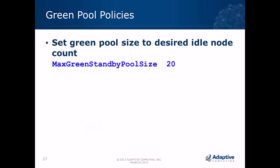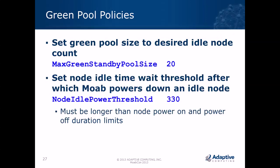You must define the green pool size using the max green standby pool size parameter. Choose a value that makes sense — experiment to find the average number of nodes requested by typical jobs. You'll also need to set the idle time wait threshold, which is how long Moab waits when there are excess idle nodes before powering them down. This must be longer than the node power-on and power-off duration limits specified earlier in the power management configuration.